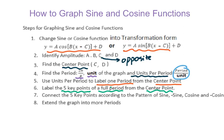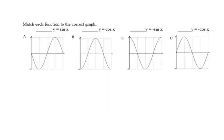Then you need to connect these five key points according to the pattern: sine, negative sine, cosine, or negative cosine. Then you can extend the graph into more periods. First of all, match each function to the correct graph.